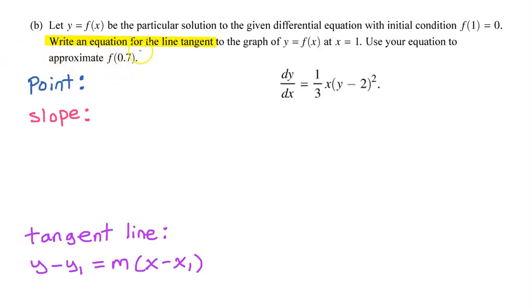First we need to write an equation for the tangent line. Whenever they ask us to find the equation of a tangent line, I always use point-slope form, which reminds me that all I need is a point and the slope. The thing is, they already gave us a point. f(1) is equal to 0. That translates into the point (1,0).